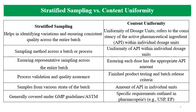In Stratified Sampling, the goal is ensuring representative samples across the entire batch, while in Content Uniformity, the goal is ensuring each dose has the appropriate amount of API. Stratified Sampling belongs to the process validation and quality assurance stage, whereas Content Uniformity is a finished product testing and batch release criterion. In Stratified Sampling, samples from various strata of the batch are taken; in Content Uniformity, the finished formulation is tested for the amount of API in each individual unit.